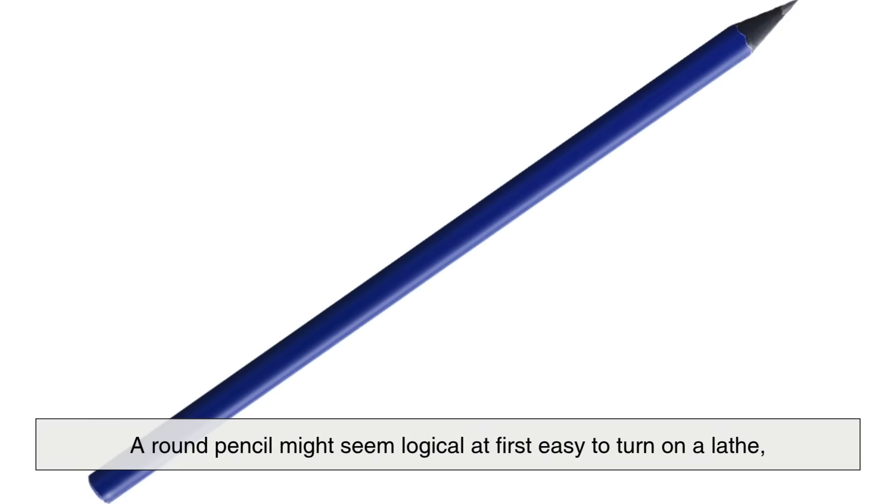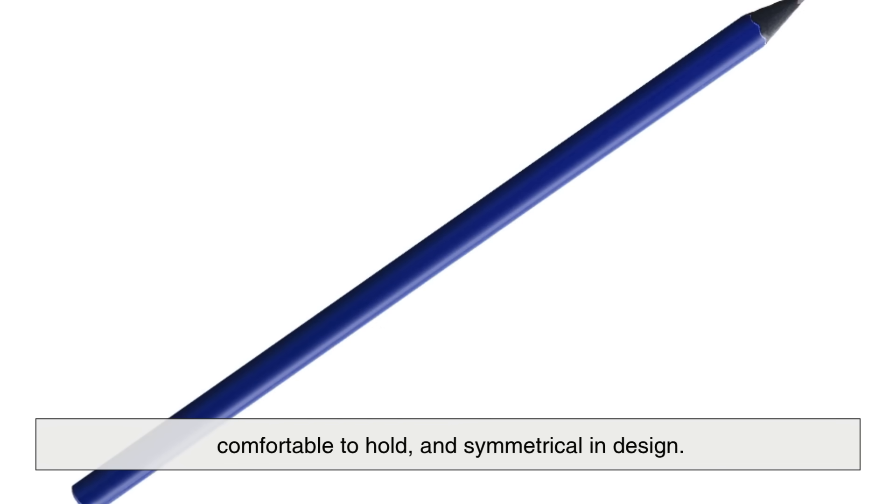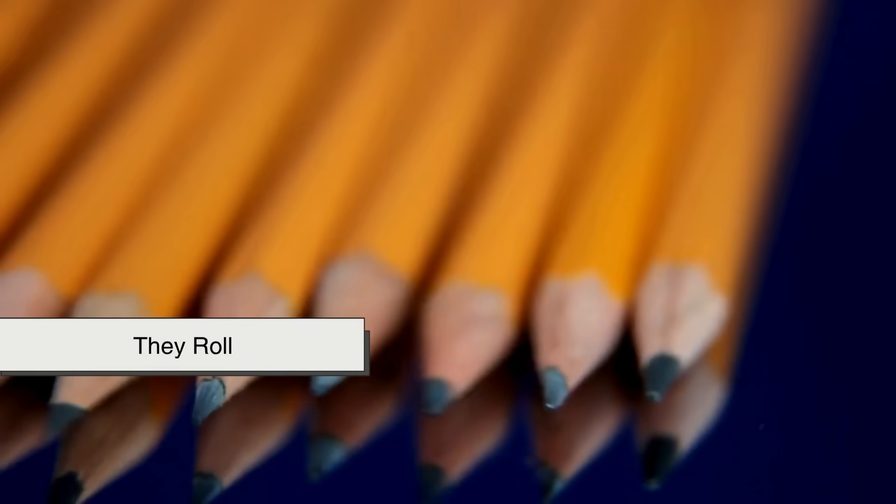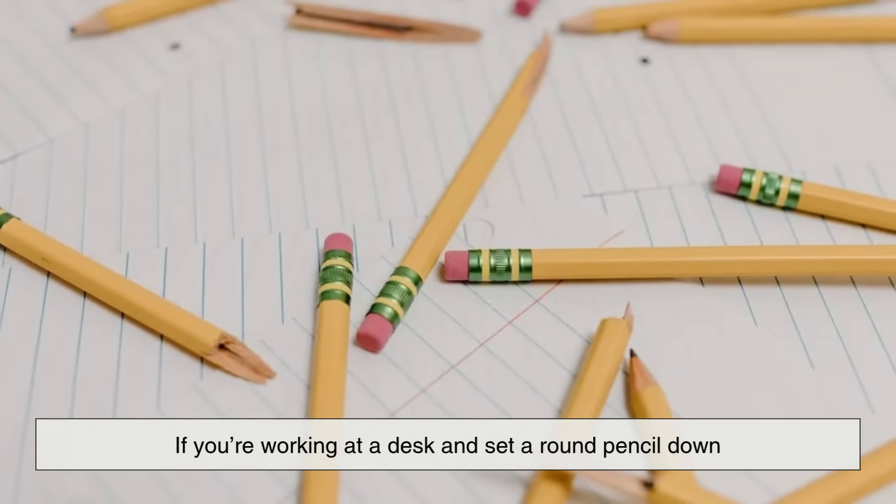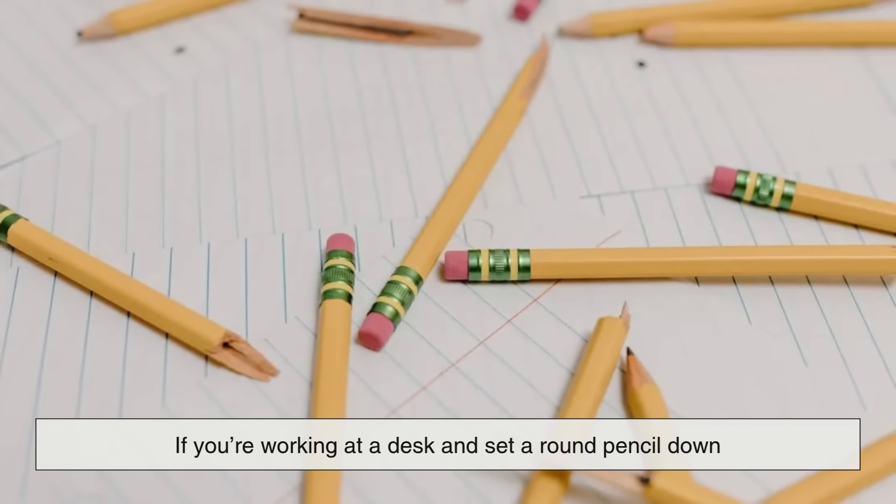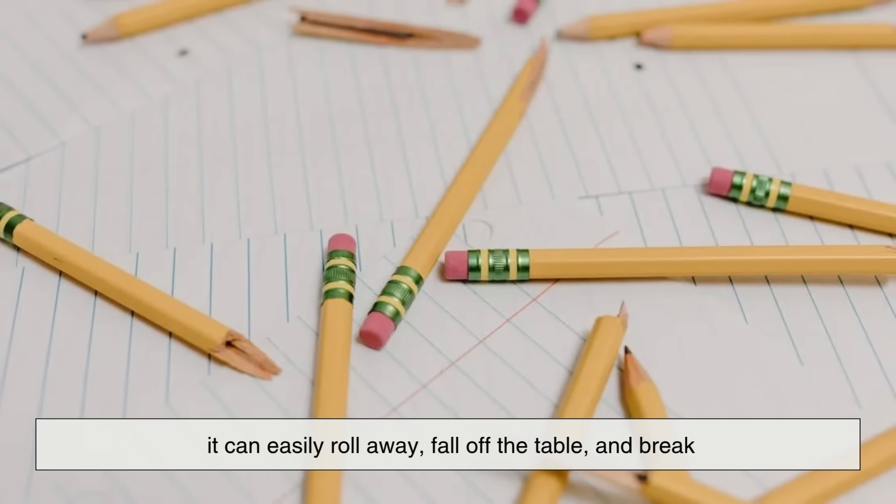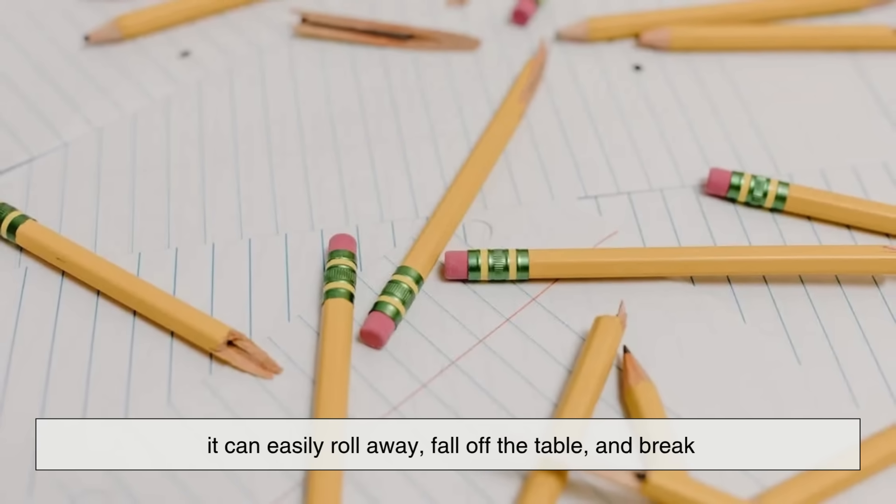Early mass-produced pencils were often round. A round pencil might seem logical at first, easy to turn on a lathe, comfortable to hold, and symmetrical in design. But round pencils have a few practical problems. First, they roll. If you're working at a desk and set a round pencil down, it can easily roll away, fall off the table, and break.